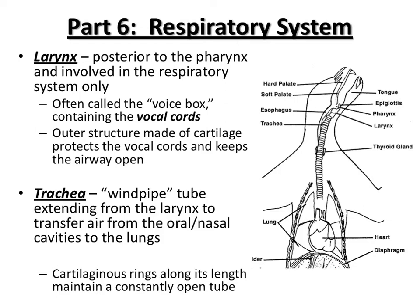The larynx is often generically called the voice box, and inside it you will find the vocal cords. We call it a voice box because the outer structure of the larynx is a cartilage box — this is the Adam's apple in a male. You also have a larynx, and it does cause a slight protrusion in the front of your neck, but it's usually not as accentuated as it is in males.